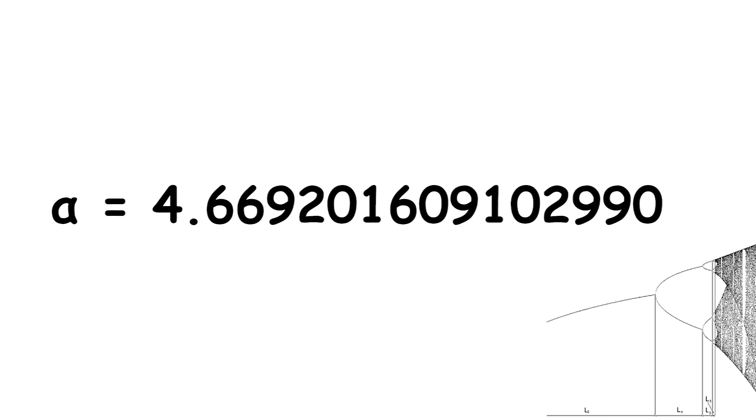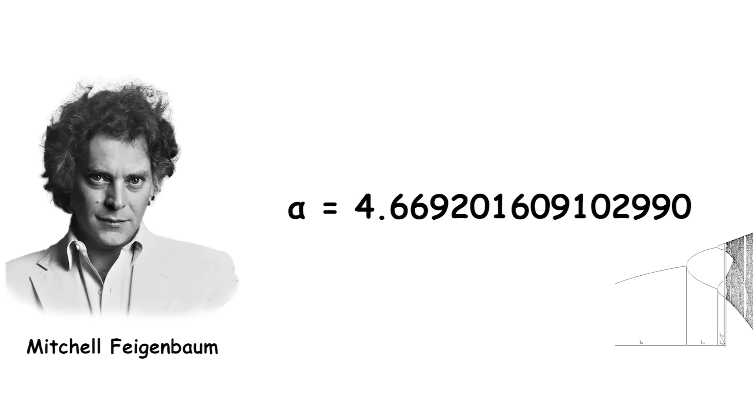The first Feigenbaum constant, denoted by the Greek letter delta or alpha, is a number that has approximately a value of 4.669, and this constant was discovered by the mathematician Mitchell Feigenbaum in the late 1970s.